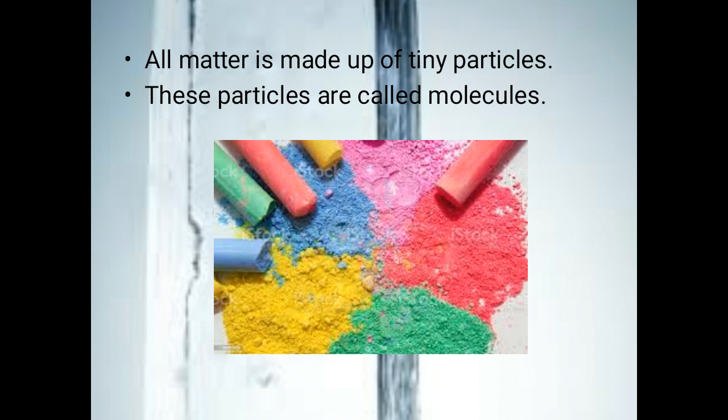How is matter made up? Matter is made up of tiny particles that cannot be seen by our naked eye. These particles are called molecules. For example, take these chalk pieces — when you powder a chalk piece, it gets divided into small tiny particles, which are further made up of molecules.